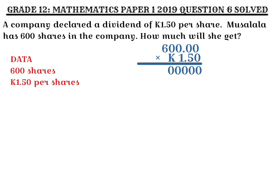Once I'm done multiplying there, the next thing is I'm going to multiply 600 by 5. Since I'm going to use 5, I write one zero as a place holder. 5 times 0 gives us 0 for each column. Then 5 times 6 gives us 30. I write the entire 30 because 6 is the last number — there is no other number to multiply, so I write the whole 30.